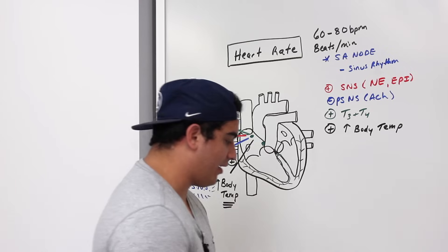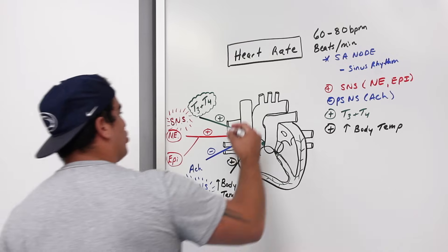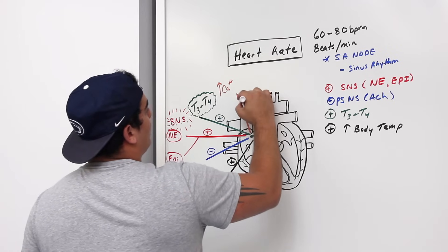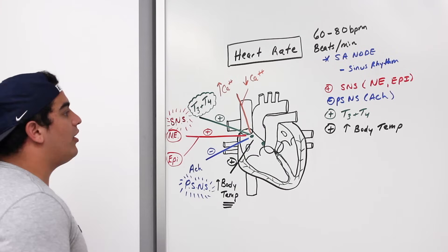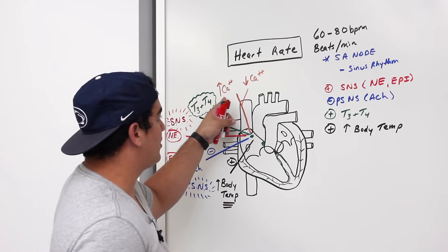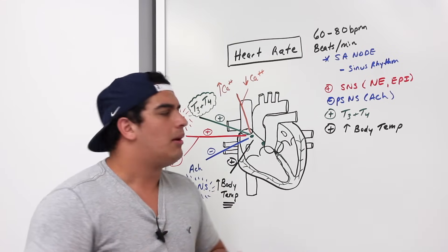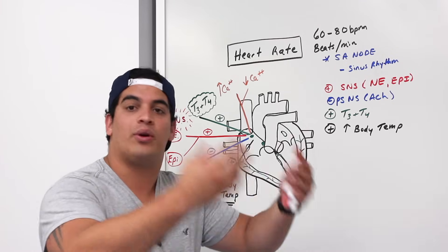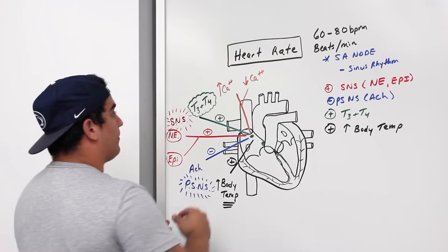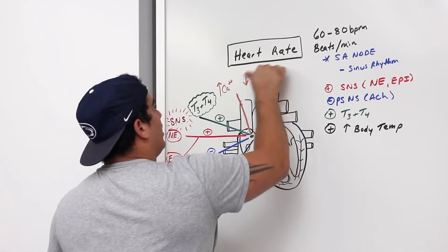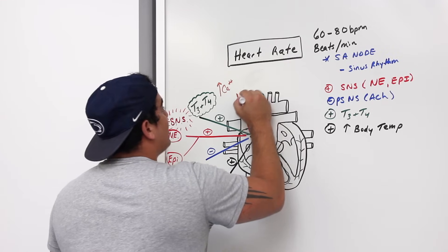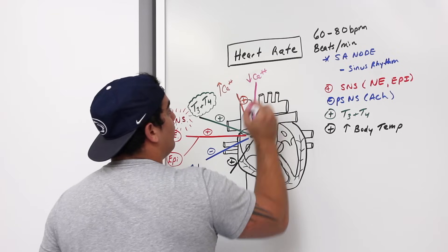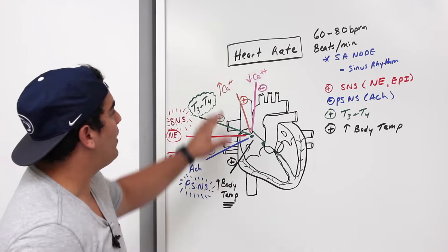Ions are also critical regulators. Calcium is very important: high calcium levels tend to speed up the heart rate — hypercalcemia drives increased depolarization and action potentials — making it a positive chronotropic agent. Low calcium levels mean less calcium entering the cell, making it a negative chronotropic agent.